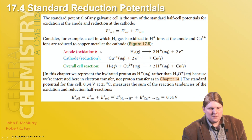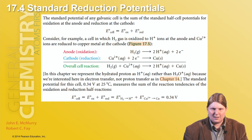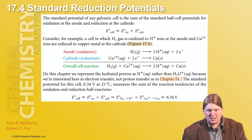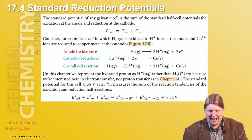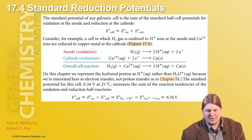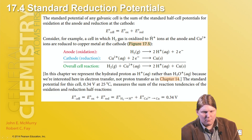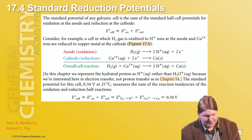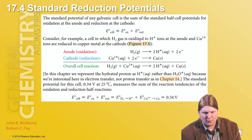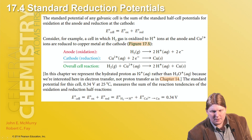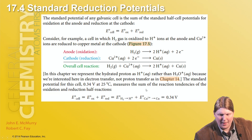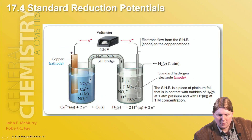Standard reduction potentials: typically, reference materials give the standard reduction potentials for reactions as reductions. We reverse one and add it to the other to get the standard cell potential. It's difficult to measure the voltage of a single half reaction because the voltage only flows when the circuit is complete, so we establish a reference zero and base everything else off that. This is the standard hydrogen electrode, SHE.